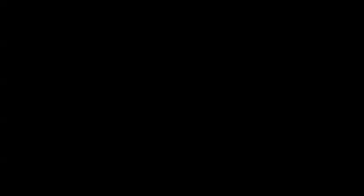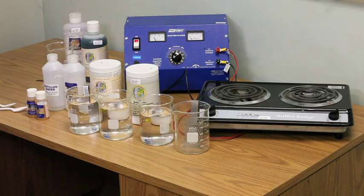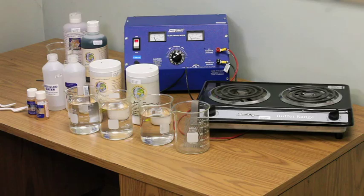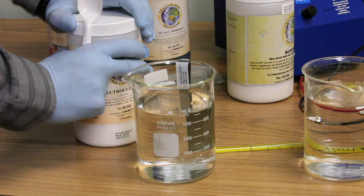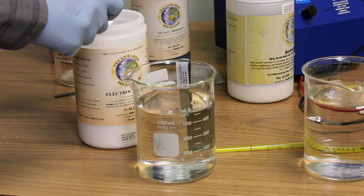To begin the actual plating process, you will first need to mix the following chemical baths. Place a stainless steel anode in a 600 milliliter beaker that is three-quarter filled with distilled water. Next, place two teaspoons of the ElectroClean powder in this beaker.